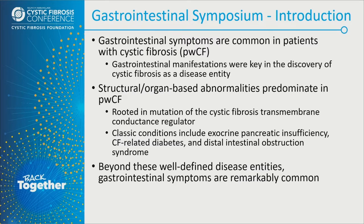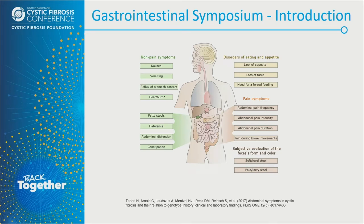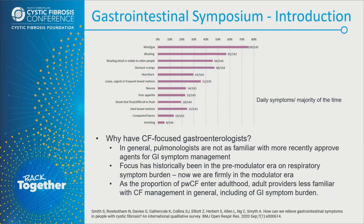We have classic conditions known to be related to cystic fibrosis, including exocrine pancreatic insufficiency, CF-related diabetes, and distal intestinal obstruction syndrome. Beyond these well-defined disease entities, gastrointestinal symptoms remain remarkably common in patients with CF — even without an episode of distal intestinal obstruction syndrome or loose bowel movements from exocrine pancreatic insufficiency. Symptoms include nausea, vomiting, bloating, and flatulence. There are patients with these symptoms on a more regular basis, making it challenging to manage their symptom burden.